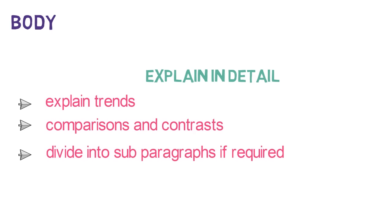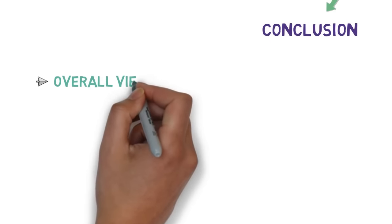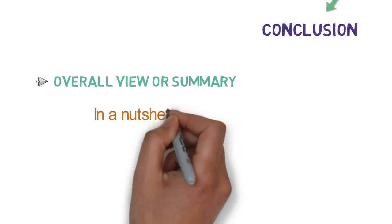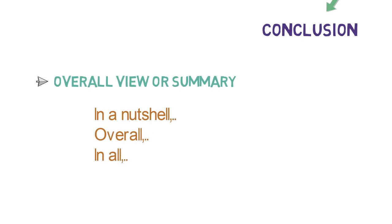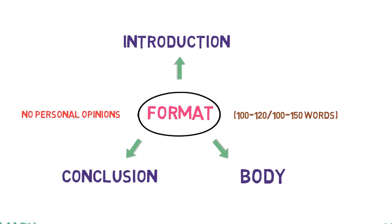Now comes the third section which is conclusion. In the conclusion, conclude the paragraph giving the overall view or summary of the diagram. Some most commonly used phrases concluding could be in a nutshell, overall, in all. Please note one important thing here: While writing any analytical paragraph, no personal opinions, conclusions or observations should be added.